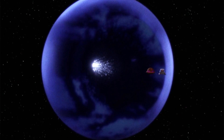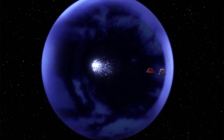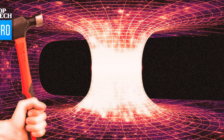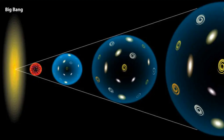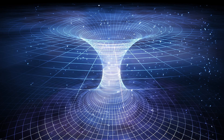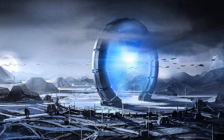According to Einstein's theory of general relativity, wormholes require exotic forms of matter with negative energy density in order to prevent their collapse. However, no evidence for the existence of such exotic matter has been found in nature so far. Additionally, the stability of wormholes is a major challenge, as they tend to collapse or become unstable due to quantum effects and the intense gravitational forces involved. Further exploration and theoretical advancements are necessary to determine if stable wormholes can possibly exist in our universe.